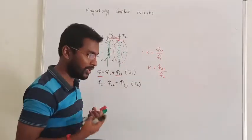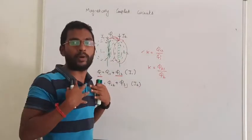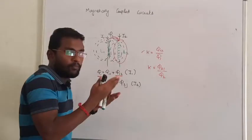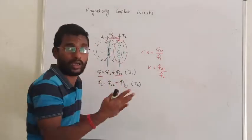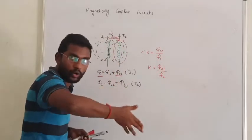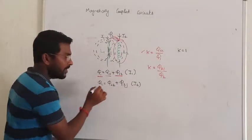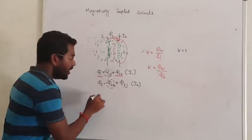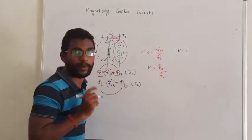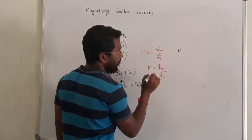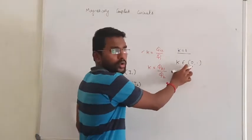The same coefficient of coupling can be redefined as the amount of flux being linked with the primary coil from the secondary, out of the total flux. Ideally the coefficient of coupling is equal to 1 — meaning there is no leakage flux, and all primary flux links with the secondary and vice versa. Practically, the value ranges between 0 and 1; it cannot be exactly 0, as some flux will always be linked.